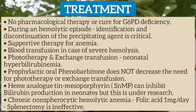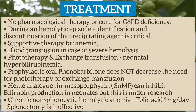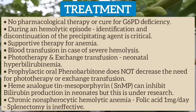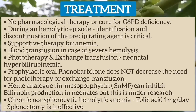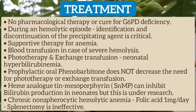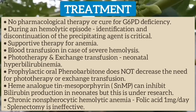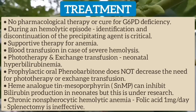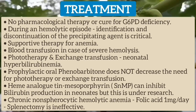There is no pharmacological therapy or cure for G6PD deficiency. During a hemolytic episode, identification and discontinuation of the precipitating agent is critical. Anemia is treated with supportive therapy, and blood transfusion is used only in severe hemolysis. Neonatal hyperbilirubinemia is treated with phototherapy or exchange transfusion. Prophylactic oral phenobarbitone does not decrease the need for phototherapy or exchange transfusion. Heme analogs like tin mesoporphyrin can inhibit bilirubin production but remain experimental. For chronic non-spherocytic hemolytic anemia, folic acid at 1 mg per day is given, and splenectomy is ineffective.